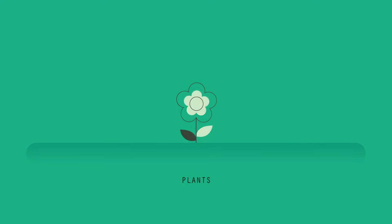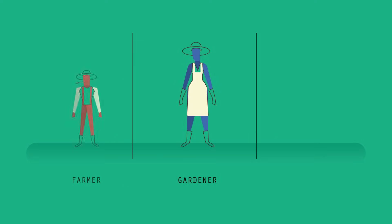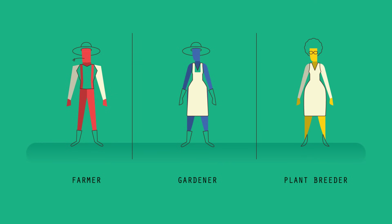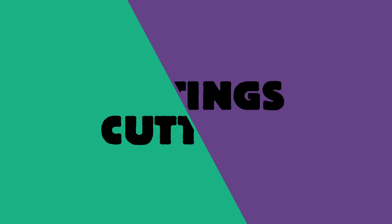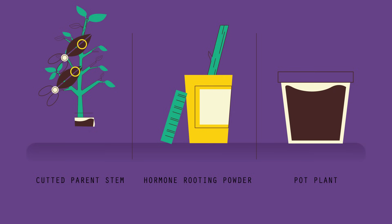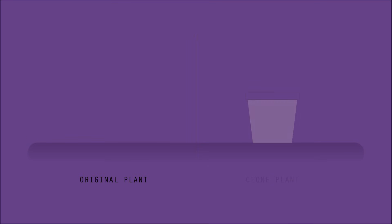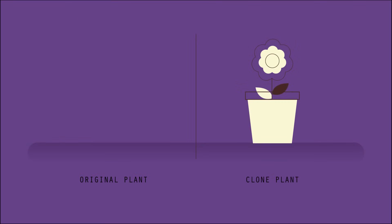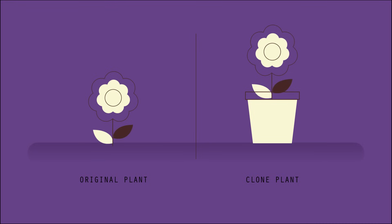Let's start with plants. A gardener, farmer or plant breeder might want to make many copies of a particular plant quickly. The easiest and cheapest way to do this is to take cuttings. Shoots are cut from the parent plant, then the end of each shoot is dipped in hormone rooting powder and placed into a pot of soil. The hormone rooting powder will encourage the cutting to start growing roots, and soon a whole new plant will have grown which is identical to the original plant.